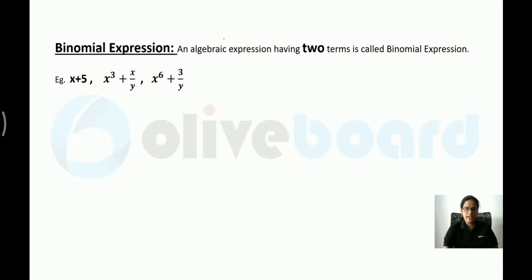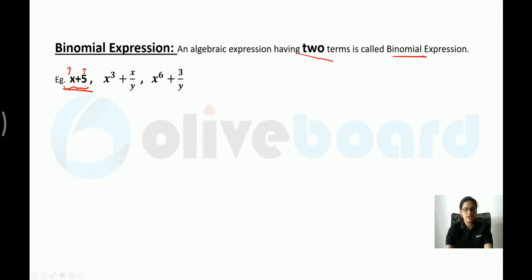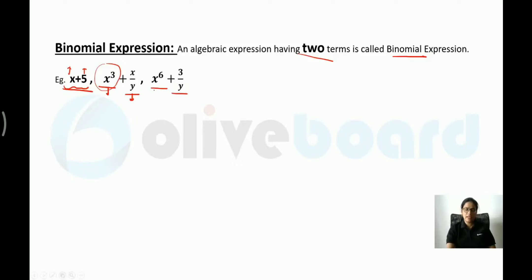Any algebraic expression which has two terms is called a binomial expression. For example, x plus 5 — this is one term, this is the second term — so there are two terms, making it a binomial. Similarly, x and y form another binomial. The term refers to whatever values are separated by addition. So this is the first term, this is the second term.